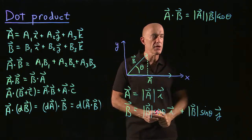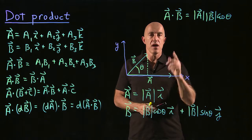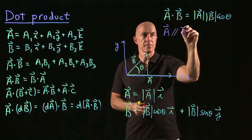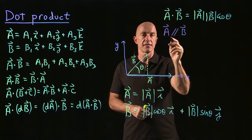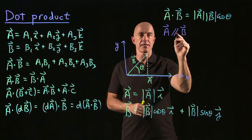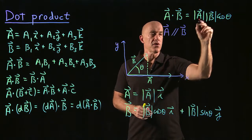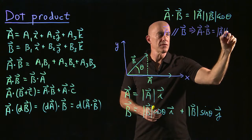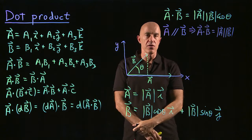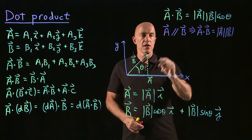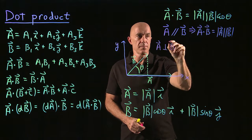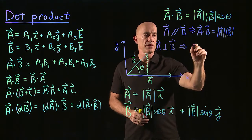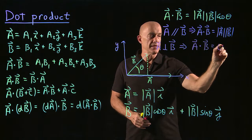A dot B equals the magnitude of A times the magnitude of B times the cosine of the angle between them, and this is independent of coordinate system — true in any coordinate system. What happens if A and B are parallel? If A is parallel to B, meaning B is a scalar constant times A, the angle is 0 and cosine of 0 is 1, so A dot B equals the magnitude of A times the magnitude of B. If A is perpendicular to B, theta is pi over 2 and cosine of pi over 2 is 0, so A dot B equals 0.